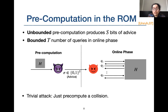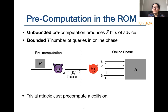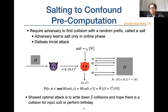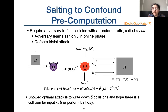Such adversaries exist in practice — rainbow tables and logjam attacks are popular examples. They can also model non-uniform adversaries. Consider what a pre-computing collision-finding adversary could do: it can simply output a collision in hash function h as advice, then win with probability almost 1 in the online phase.